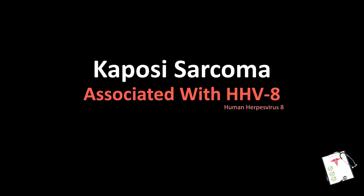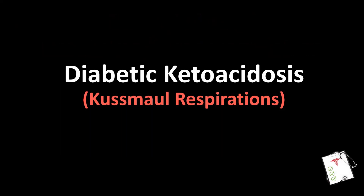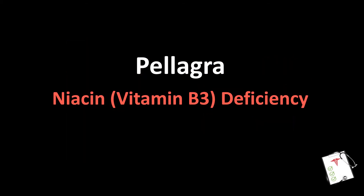Number 37: Deep labored breathing, hyperventilation. Answer: Diabetic ketoacidosis — Kussmaul respirations. Number 38: Dermatitis, dementia, diarrhea. Answer: Pellagra — niacin (vitamin B3) deficiency.